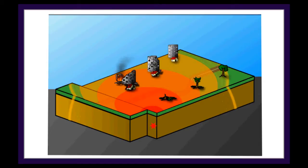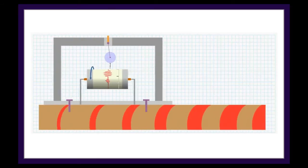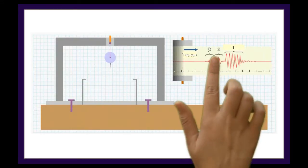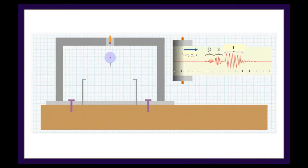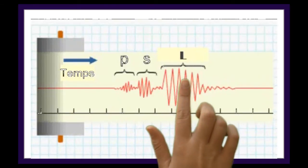These waves are recorded by a seismic recording device, i.e., a seismograph. This device captures P-waves first — the primary waves — as you can observe. Second, it captures S-waves, or secondary waves.